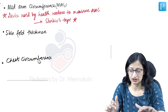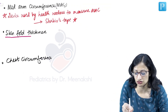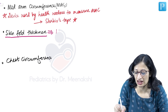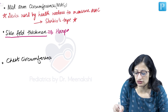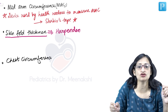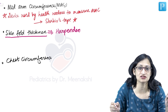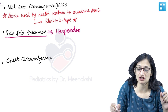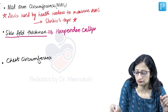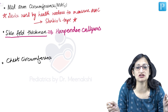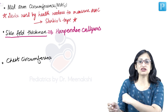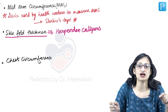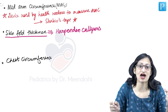Moving on to skin fold thickness — the device used to measure skin fold thickness is Harpenden calipers. These are similar to vernier calipers, which you may have used to measure the thickness of coins. When you pinch skin, you also take some amount of subcutaneous tissue along with it, which gives you an idea about the subcutaneous fat present.